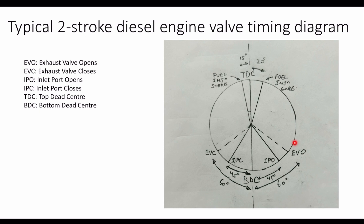All of this can be represented in a single circle spanning 360 degrees from TDC to BDC and back, because this is a two-stroke engine. The difference between this and a four-stroke engine valve timing diagram will be explained in a separate video.